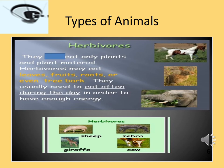Animals eat different types of food, and depending on their food habits they can be grouped into three categories. The first category is herbivores — they eat only plants and plant material, including fruits, roots, leaves and tree barks. They usually need to eat often during the day to have enough energy. Examples of herbivores are sheep, giraffe, zebra and cow.